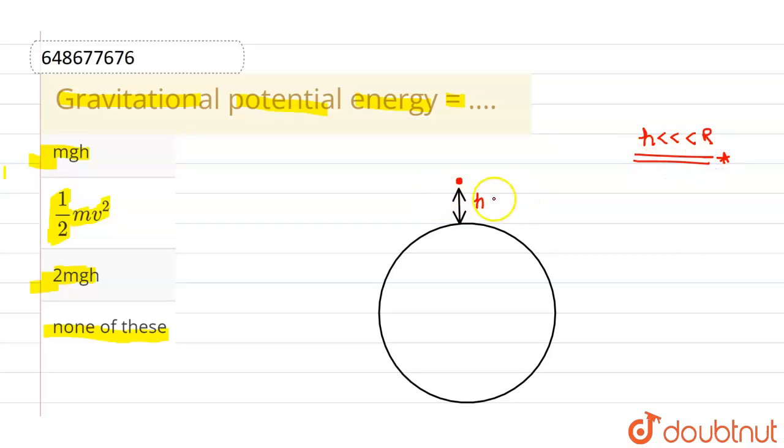Then at that particular height, the gravitational potential energy at that particular point is given by mass of that body whose gravitational potential energy we are finding out.